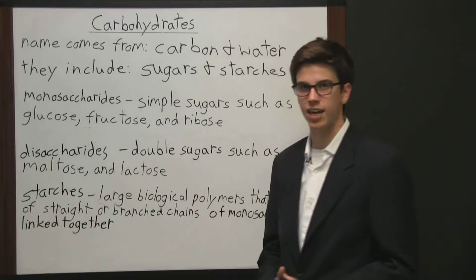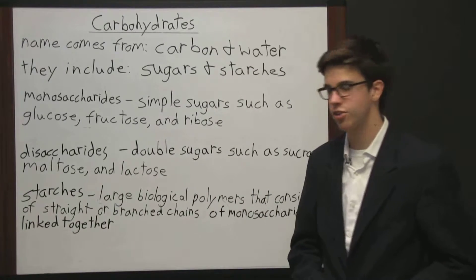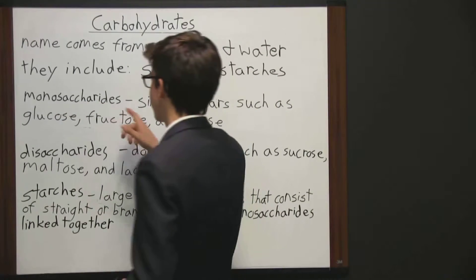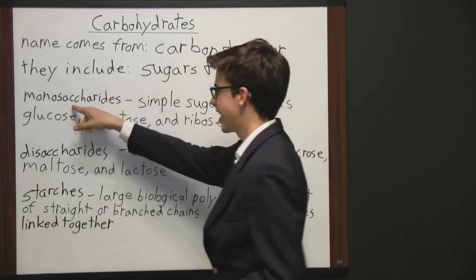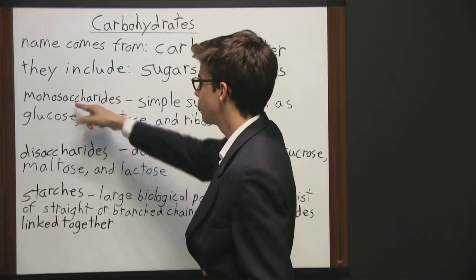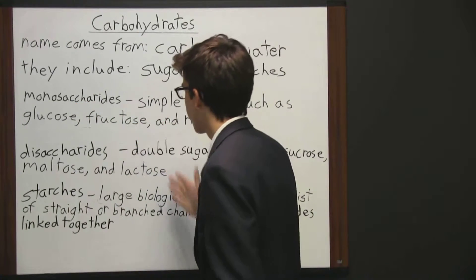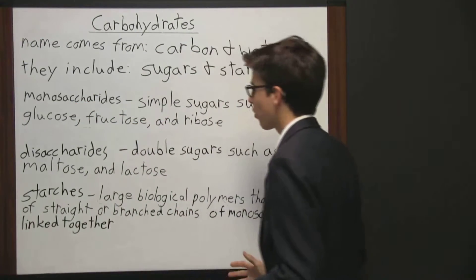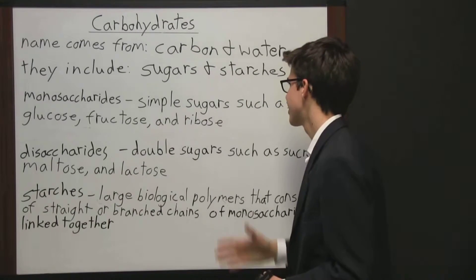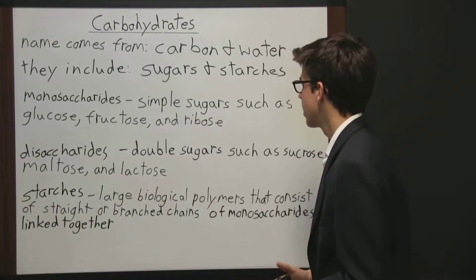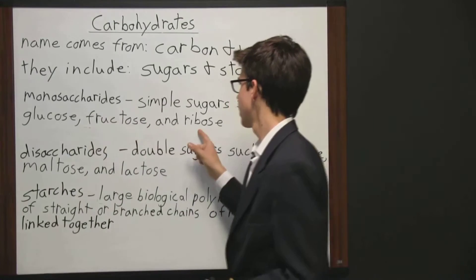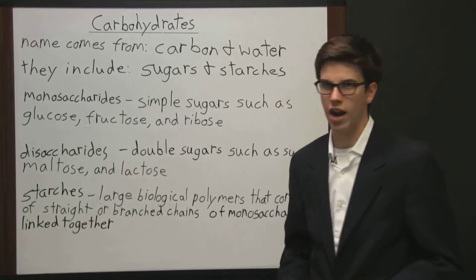There are three basic types of carbohydrates. The first being monosaccharides — it's a long word with a complicated spelling, but more important than the spelling is what a monosaccharide is. It's a simple sugar such as glucose, fructose, and ribose.